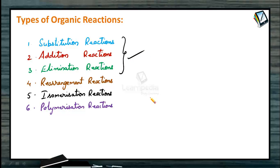In this particular session, we shall discuss only the brief meaning of these various types of reactions and one or two examples for each type. Wherever required — in hydrocarbons as well as other chapters of 12th standard — we shall discuss separately the entire detailed mechanism of each and every type of organic reaction.